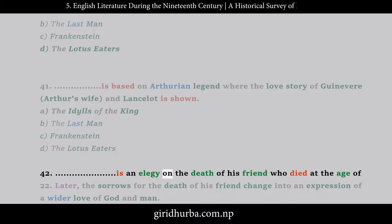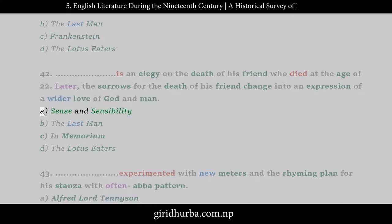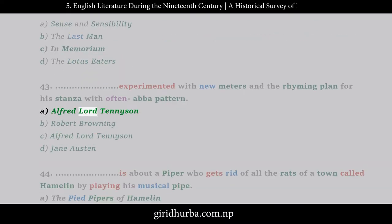Question 41: __ is based on Arthurian legend where the love story of Guinevere, Arthur's wife, and Lancelot is shown. A. The Idols of the King, B. The Last Man, C. Frankenstein, D. The Lotus Eaters. Question 42: __ is an elegy on the death of his friend who died at the age of 22; later the sorrows for the death of his friend change into an expression of a wider love of God and man. A. Sense and Sensibility, B. The Last Man, C. In Memoriam, D. The Lotus Eaters. Question 43: __ experimented with new meters and the rhyming plan for his stanza with often ABBA pattern. A. Alfred Lord Tennyson, B. Robert Browning, C. Alfred Lord Tennyson, D. Jane Austen.